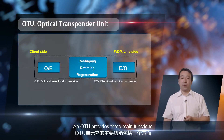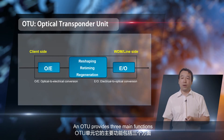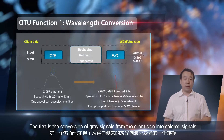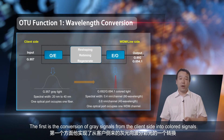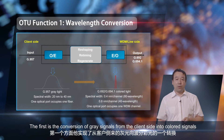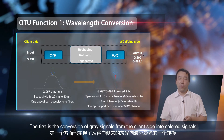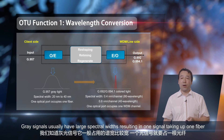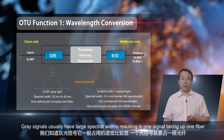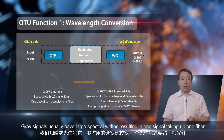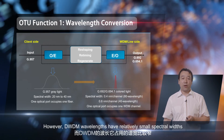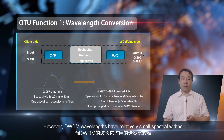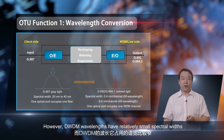An OTU provides three main functions. The first is the conversion of gray signals from the client side into colored signals. Gray signals usually have large spectral widths, resulting in one signal taking up one fiber. However, DWDM wavelengths have relatively small spectral widths.